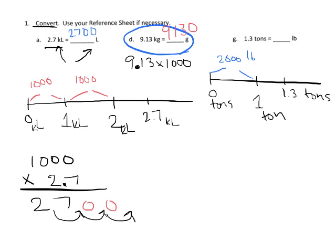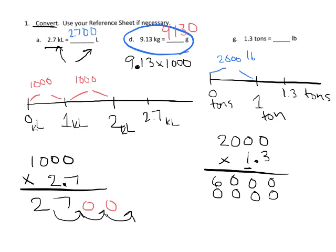And so you take the number of tons, you multiply by 2,000. So 2,000 in this case times 1.3. And we're going to multiply: 3 times 0, 3 times 0, 3 times 0, 3 times 2. We put a 0 here because we're going to pretend this is in the tens place.